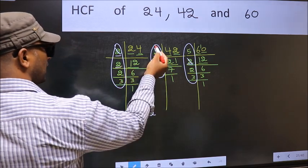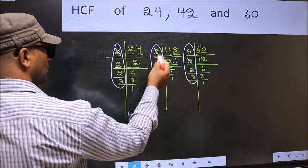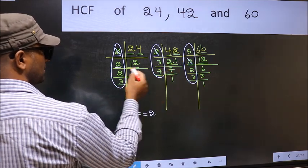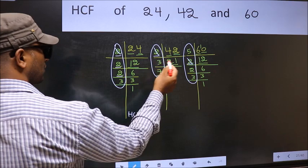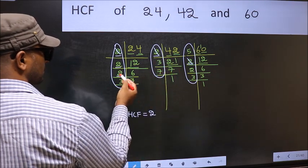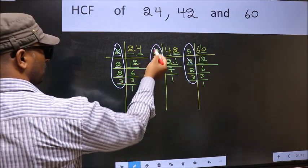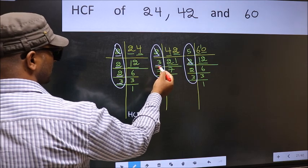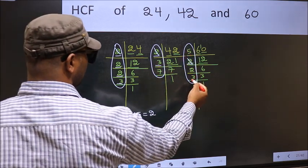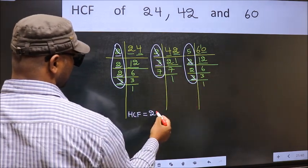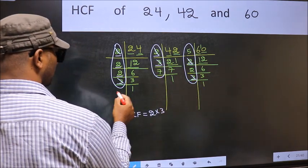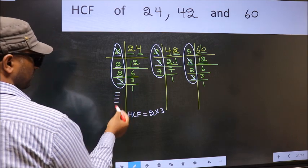Next number 2. Do we have 2 here? No. So no need for us to check in the other places. Next number 3. Do we have 3 here? Yes. So go to the next place. Do we have 3 here? Yes.